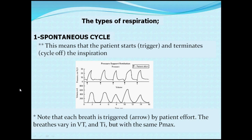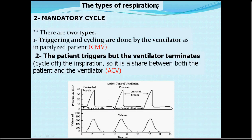Regarding types of respirations, we divide modes into spontaneous or mandatory. In spontaneous respiration, the patient triggers and terminates the cycle — so it is called a spontaneous cycle. Mandatory respirations have two subtypes: in controlled mandatory ventilation, both triggering and cycling are done by the ventilator, as when the patient is paralyzed. Alternatively, the patient may trigger while the ventilator terminates the cycle — as in volume-controlled mandatory ventilation where the patient starts the breath but the ventilator completes the cycle.